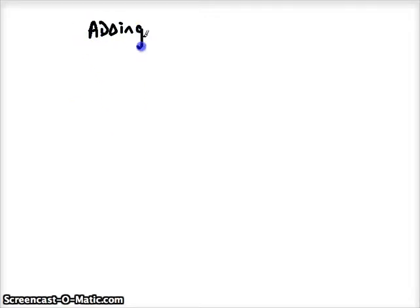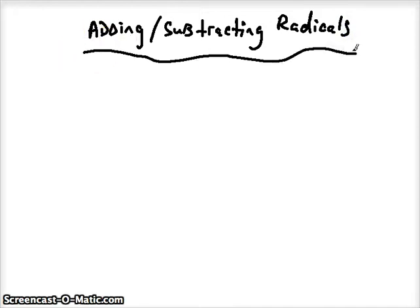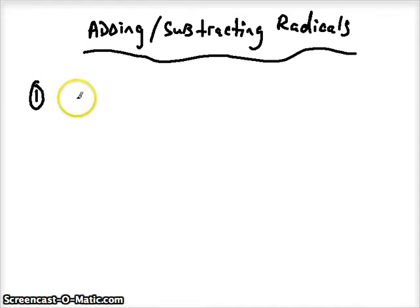In this video we're going to be adding and subtracting radicals. There are only a couple of things we need to keep in mind. I'll write the rules first and then we'll do a bunch of examples. Adding or subtracting is really just adding the opposite, so it's not really any different for either one. Two things have to be true though.